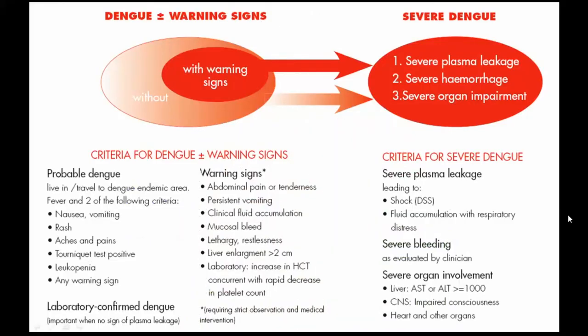In 2009, WHO revised its Dengue classification scheme from Dengue fever, Dengue hemorrhagic fever, and Dengue shock syndrome to: probable Dengue without warning signs, Dengue with warning signs, and severe Dengue. This revision is very important because earlier, patients who fell into the Dengue hemorrhagic fever category were not considered severe cases unless they also fell into the shock syndrome category.